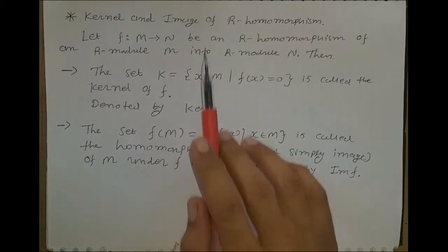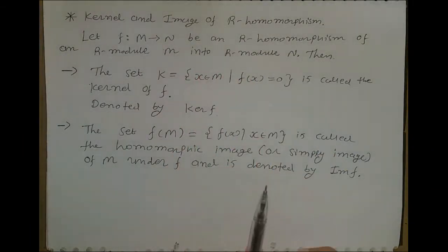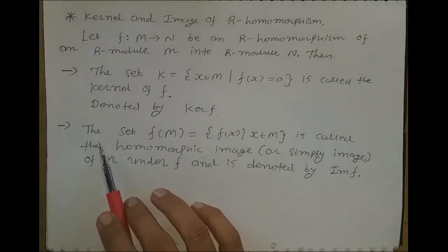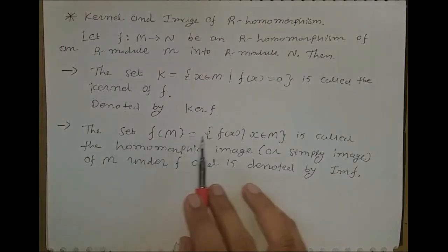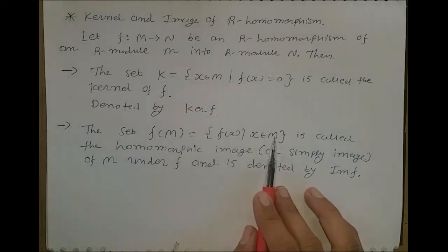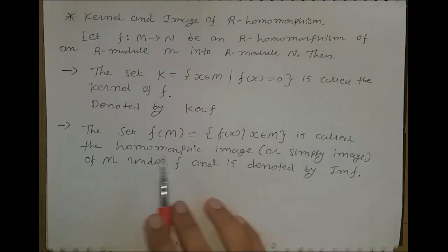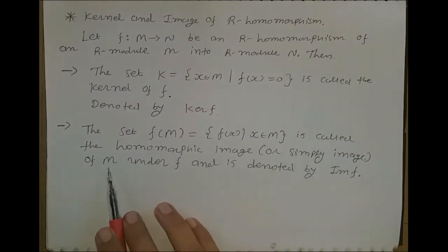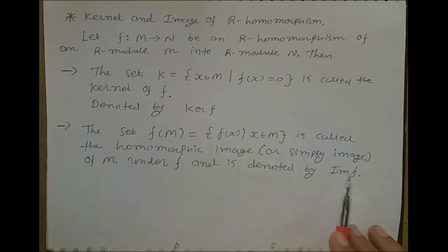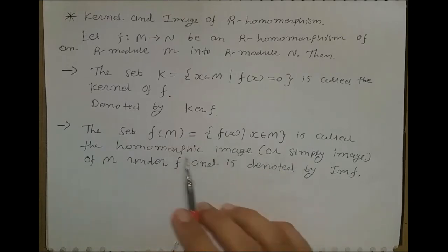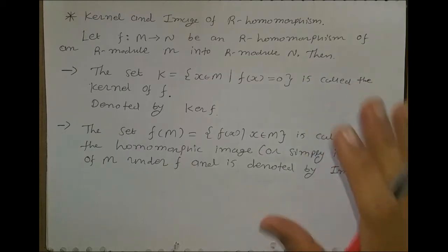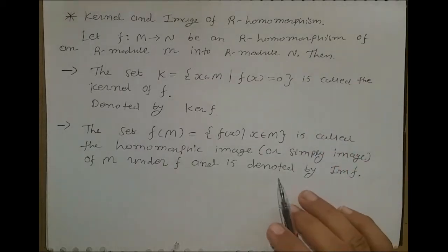The set of all such elements is called the kernel of R-homomorphism F. Now, the definition of image of R-homomorphism: the image F(M) is the set of all F(x) where x belongs to M, called the homomorphic image, or simply the image of M under F, denoted by Im(F). If you consider any function F from a set A to B, then F(A) is called the image of the function. Similarly, here F(M) is the image of R-homomorphism.